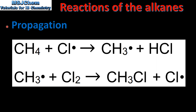The next step is propagation. In the propagation step, methane reacts with a chlorine radical to form a methyl radical and hydrogen chloride. The methyl radical then reacts with molecular chlorine to form chloroethane and another chlorine radical. As free radicals are produced in the propagation step, the reaction is known as a chain reaction.